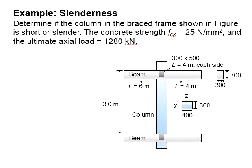Let's try an example to determine the slenderness of a column. The column is in a brace frame. It has a compressive strength of 25 N per mm squared and the ultimate load is 1280 kN.